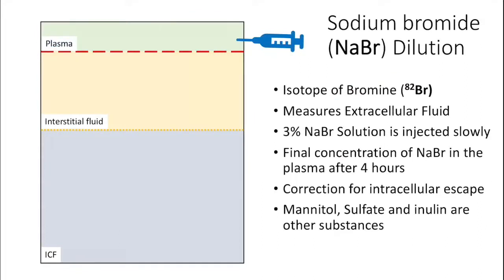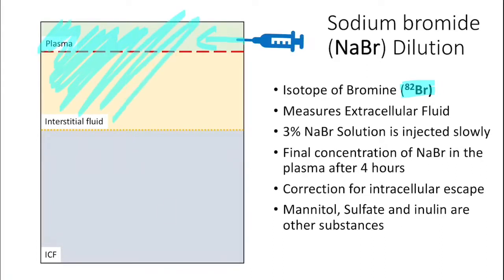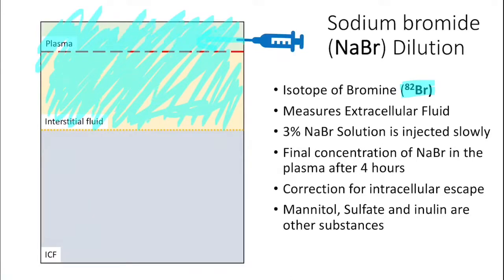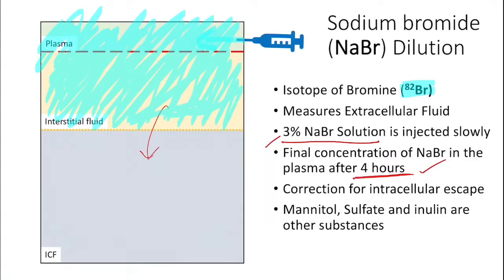Sodium bromide, using the radioactive isotope bromine-82, is used for extracellular fluid volume. Once injected into the plasma, bromine moves into the interstitial fluid as well, filling the entire extracellular fluid compartment. We inject about a 3% sodium bromide solution slowly and measure the final concentration after four hours. Some bromine also escapes into the intracellular fluid, so a correction must be made for that.